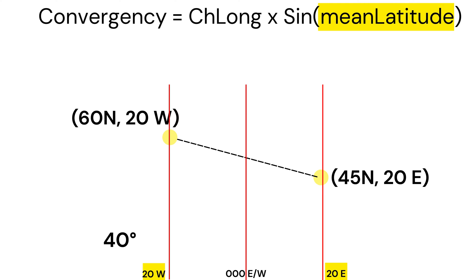Add the two latitudes, 45 degrees north and 60 degrees north, and divide them by two. You get 52.5.